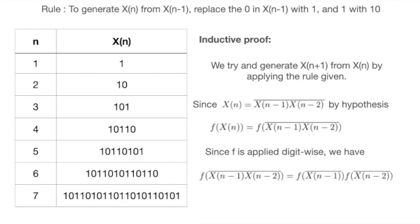Next, we start our induction hypothesis, which asserts that X(n) equals the concatenation of X(n-1) and X(n-2). We apply the recursive function to both sides of the equation.